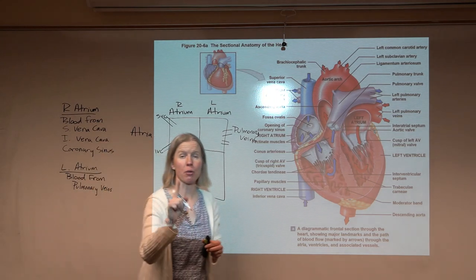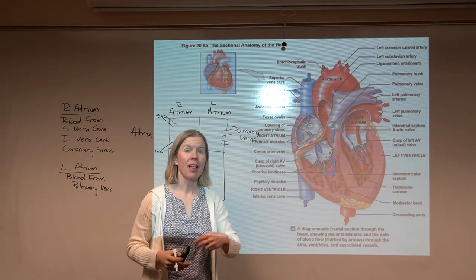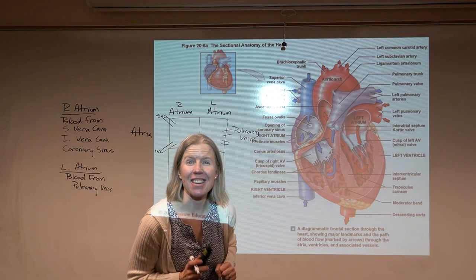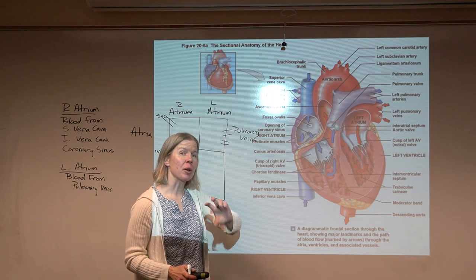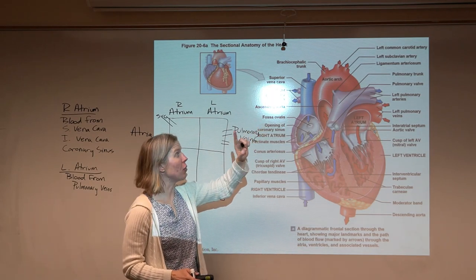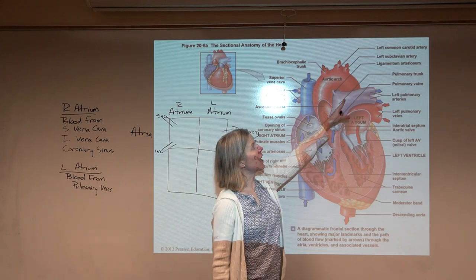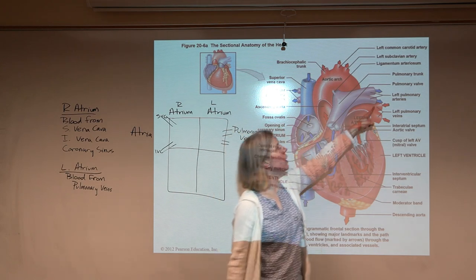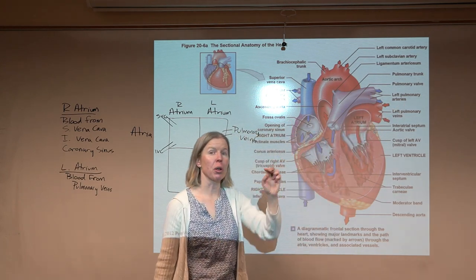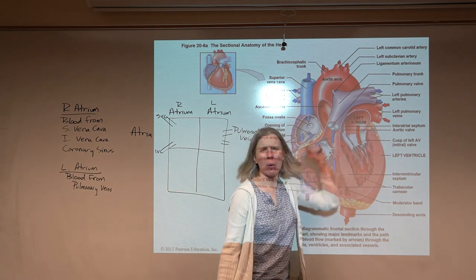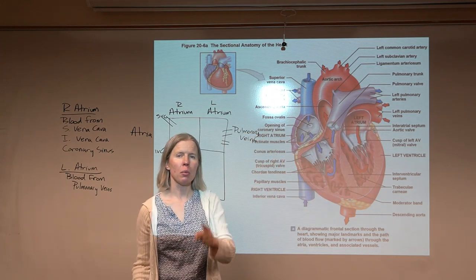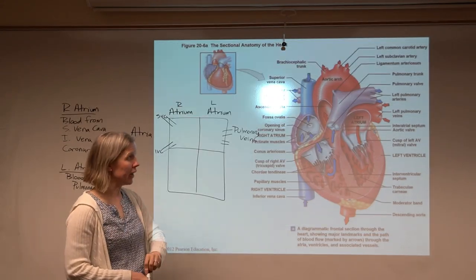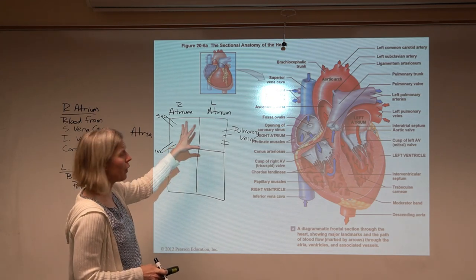Something that often throws students: we may have learned that arteries carry oxygenated blood and veins carry deoxygenated blood — that's not true. Arteries carry blood away from the heart. The arteries from the right side are actually carrying deoxygenated blood to the lungs — pulmonary arteries carry deoxygenated blood. The pulmonary veins, on the other hand, are full of oxygen from the lungs. So: veins return blood to the heart, arteries carry it away.